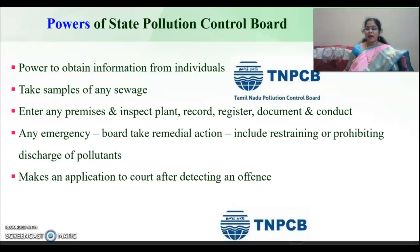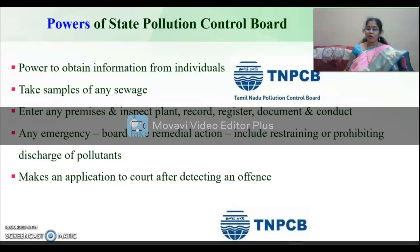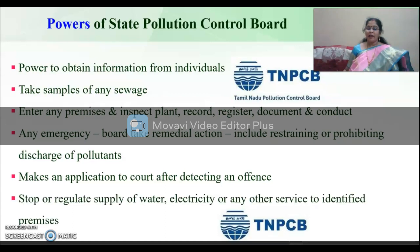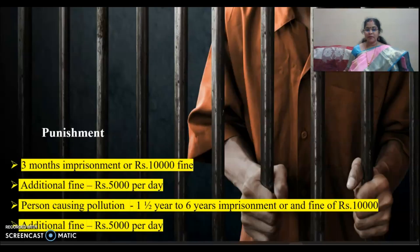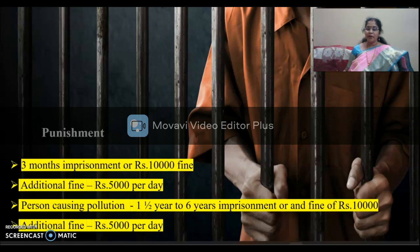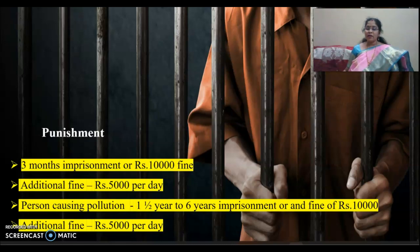The boards can make an application to the court after detecting an offense and can stop regulation of water supply, electrical supply, or any other services to identified premises. If people do not obey court orders, they could be given punishment of three months imprisonment or a 10,000 rupee fine with an additional fine of 5,000 per day. The person causing pollution could be given one and a half to six years of imprisonment with a fee of 10,000 and an additional 5,000 per day.